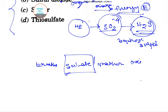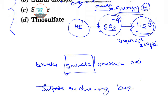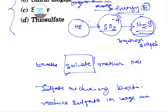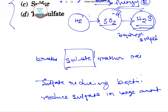Many bacteria reduce a small amount of sulfate in order to synthesize sulfur-containing cell components. By contrast, sulfate-reducing bacteria reduce sulfate in large amounts to obtain energy, and expel the resulting sulfide as waste.